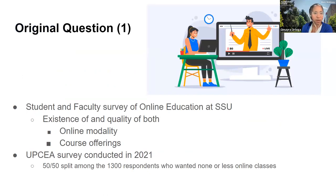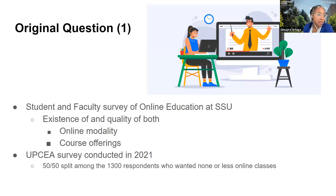Hello, my name is Omaida Ortega, mathematics faculty as Kristen mentioned, and the Square associate this year. Our original research question, which was very well received within the Square group, was this idea of looking at student and faculty satisfaction and perception of engagement with online education at Sonoma State coming out of the pandemic. We were very interested to hear what the Sonoma State community had to say about this topic, and we had actually gone down this rabbit hole pretty deep before we learned that Sonoma State had engaged in a very similar study the year before — the UPSIA, the University Professional and Consulting Education Association's survey on this very topic.